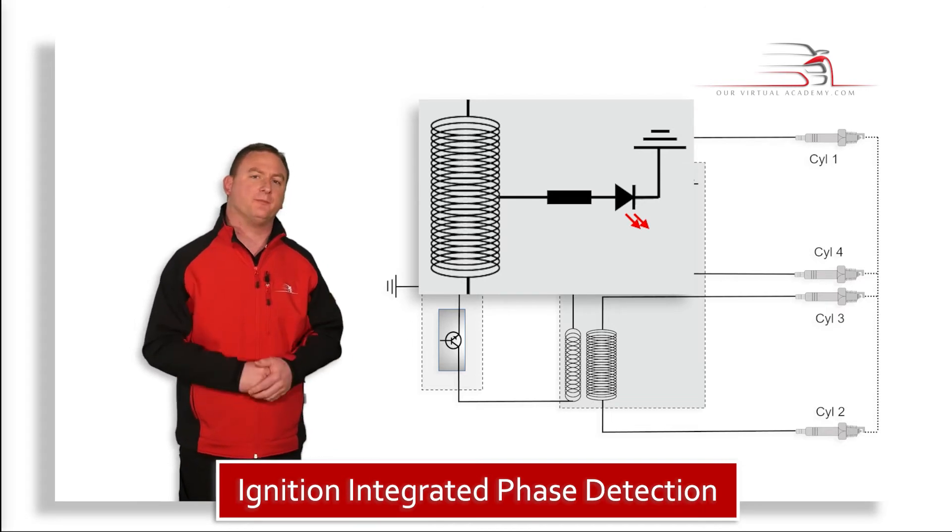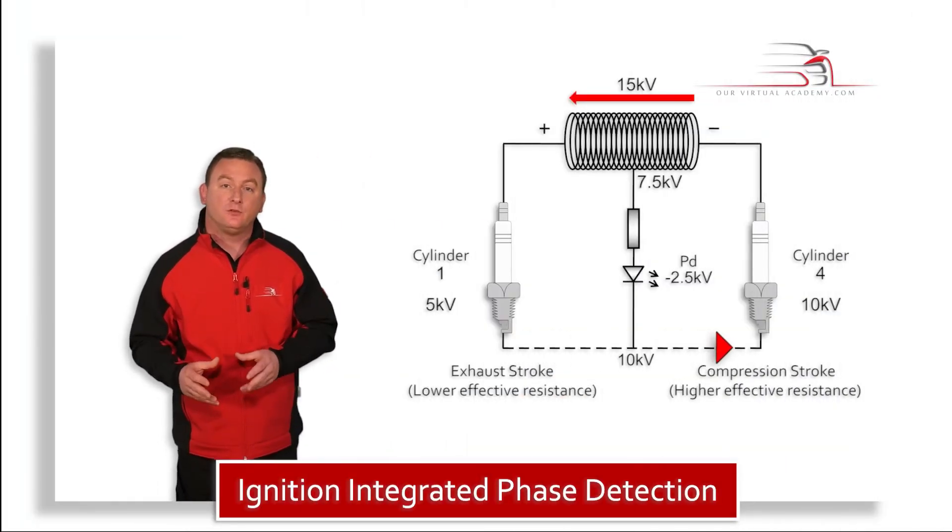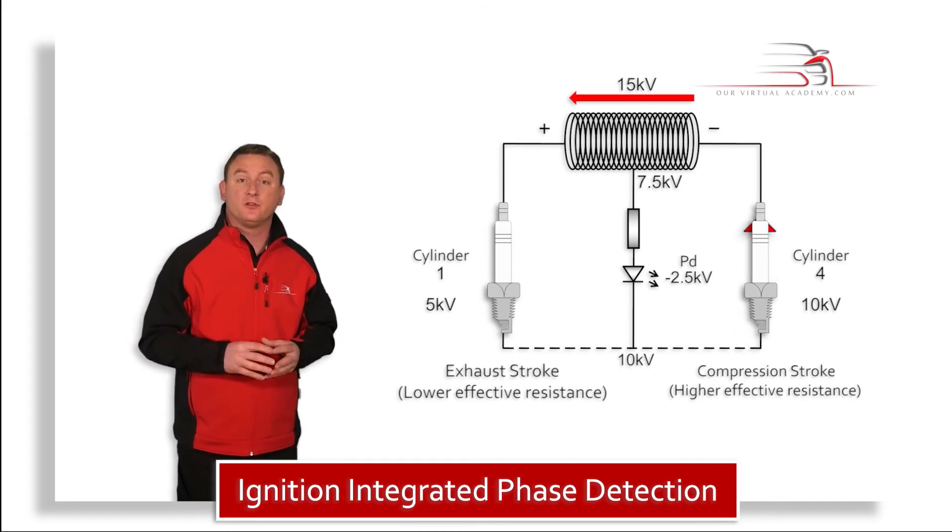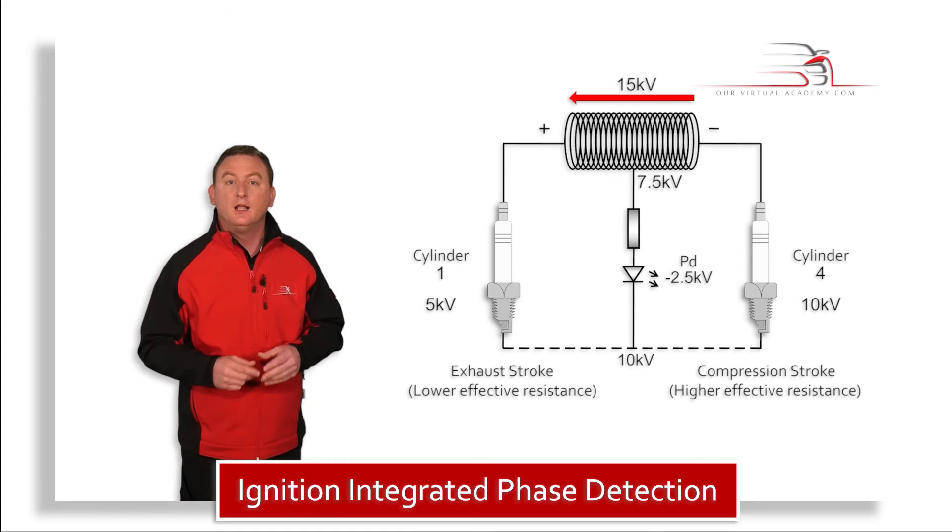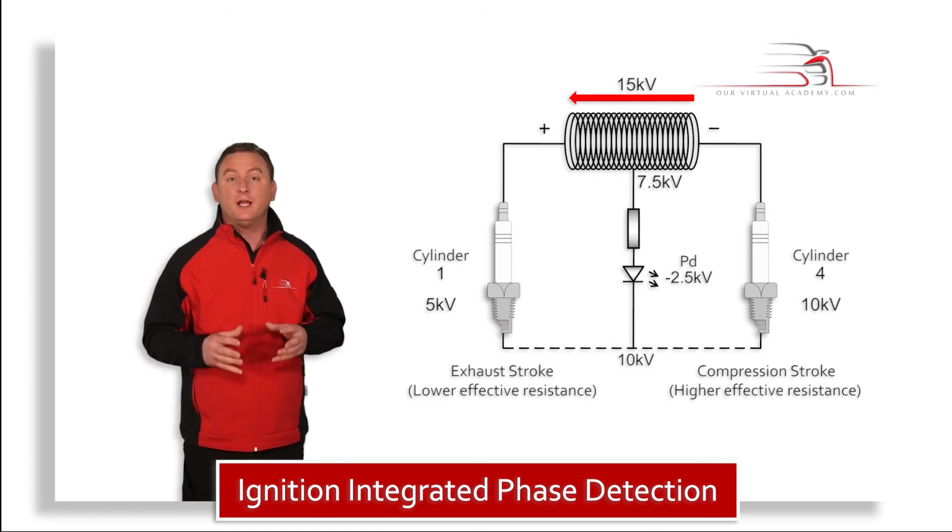So how does it work? If we're in the engine phase whereby cylinder number one is on its exhaust stroke and cylinder number four is on its compression, cylinder number four will have higher effective resistance.